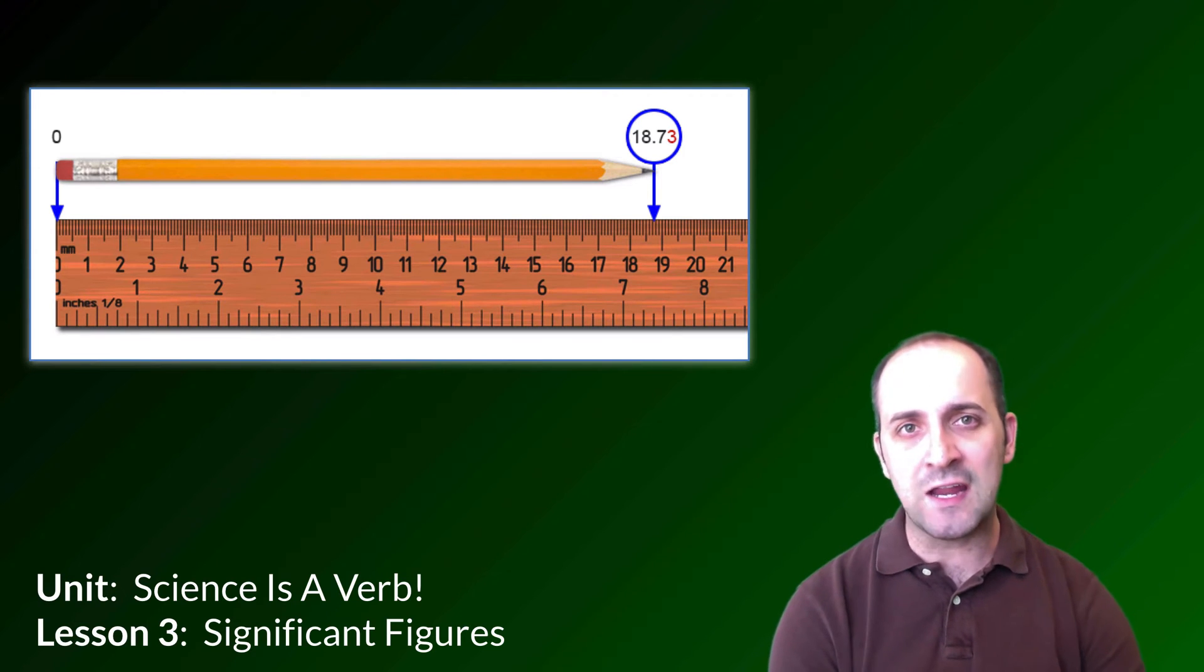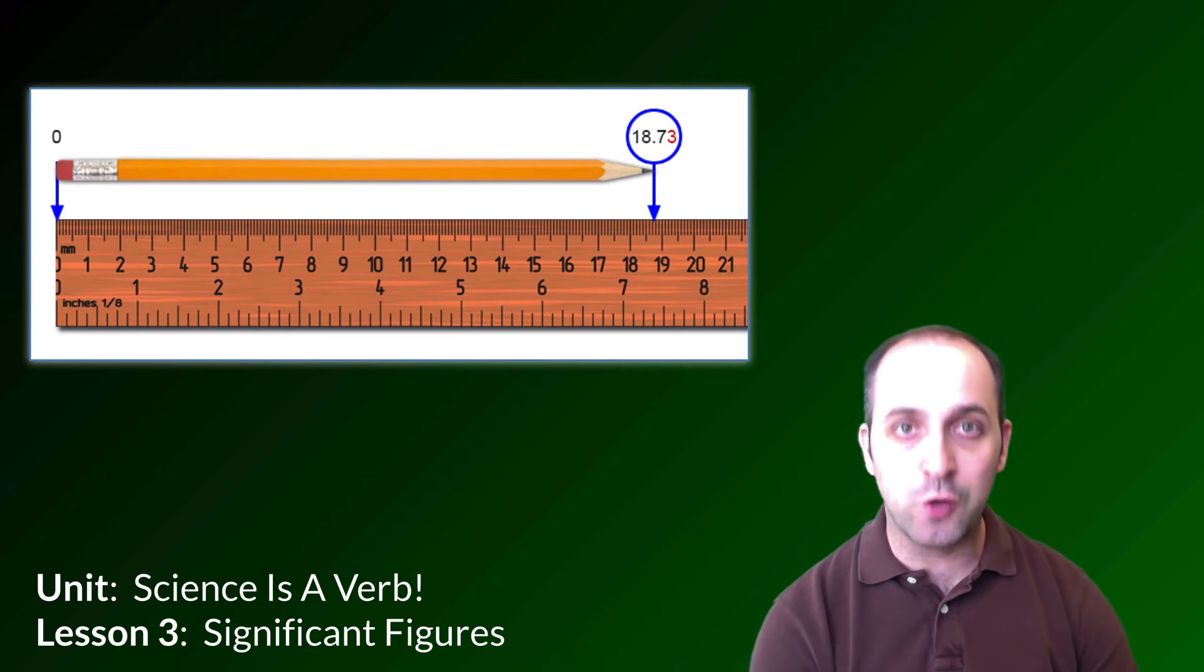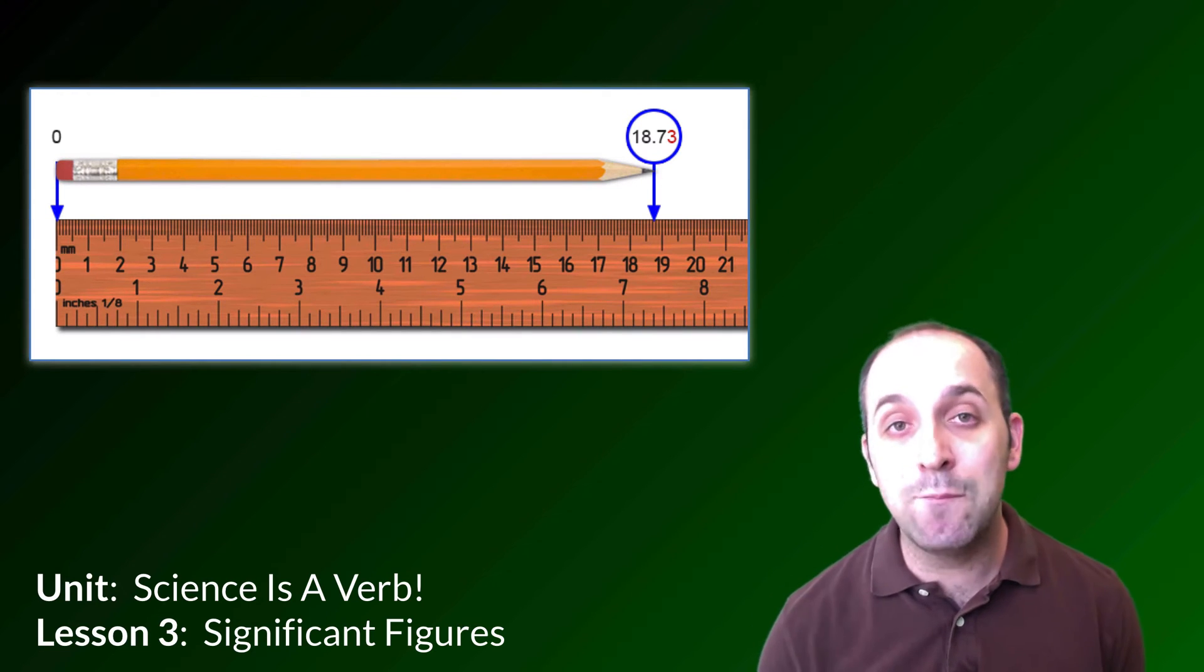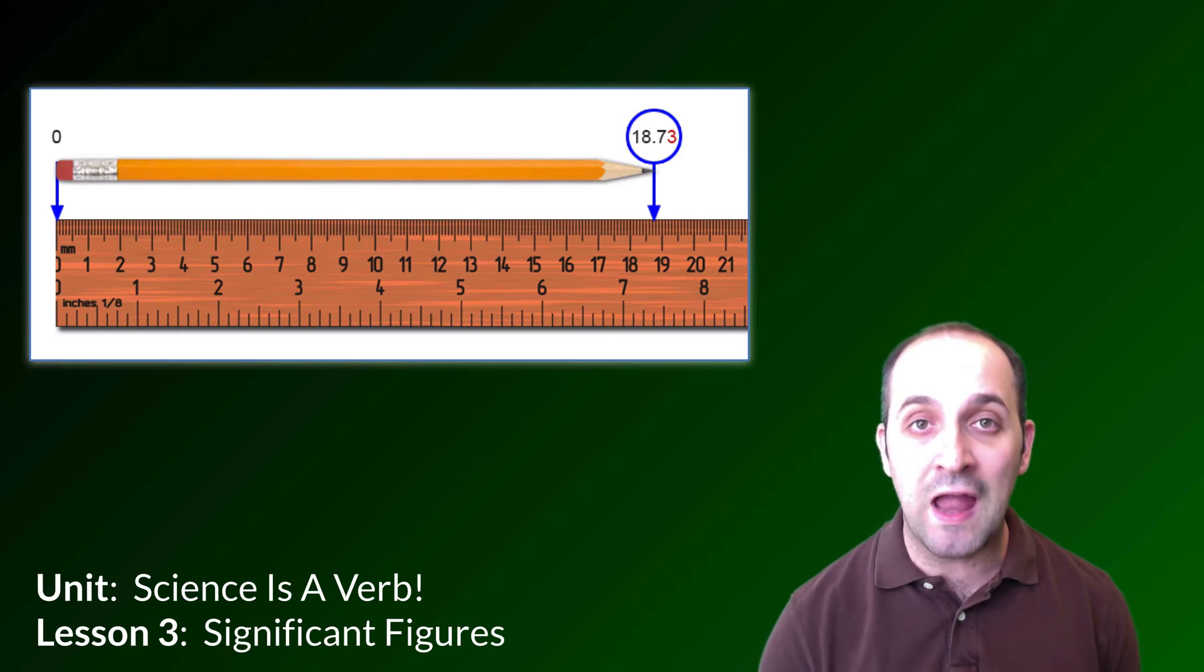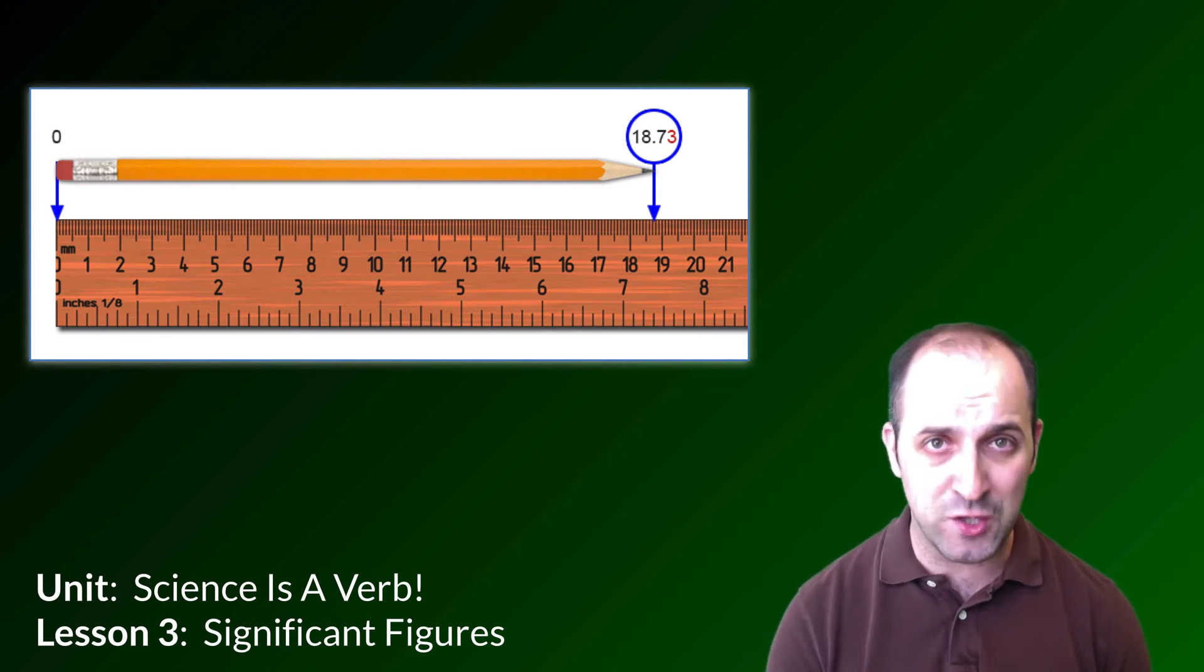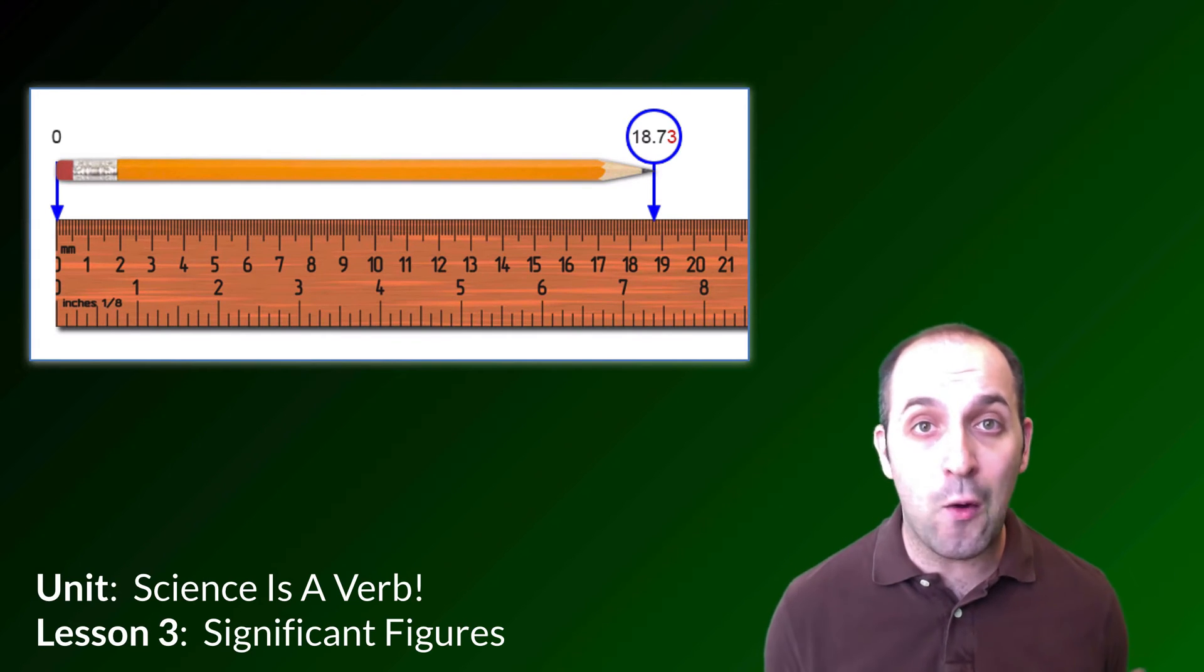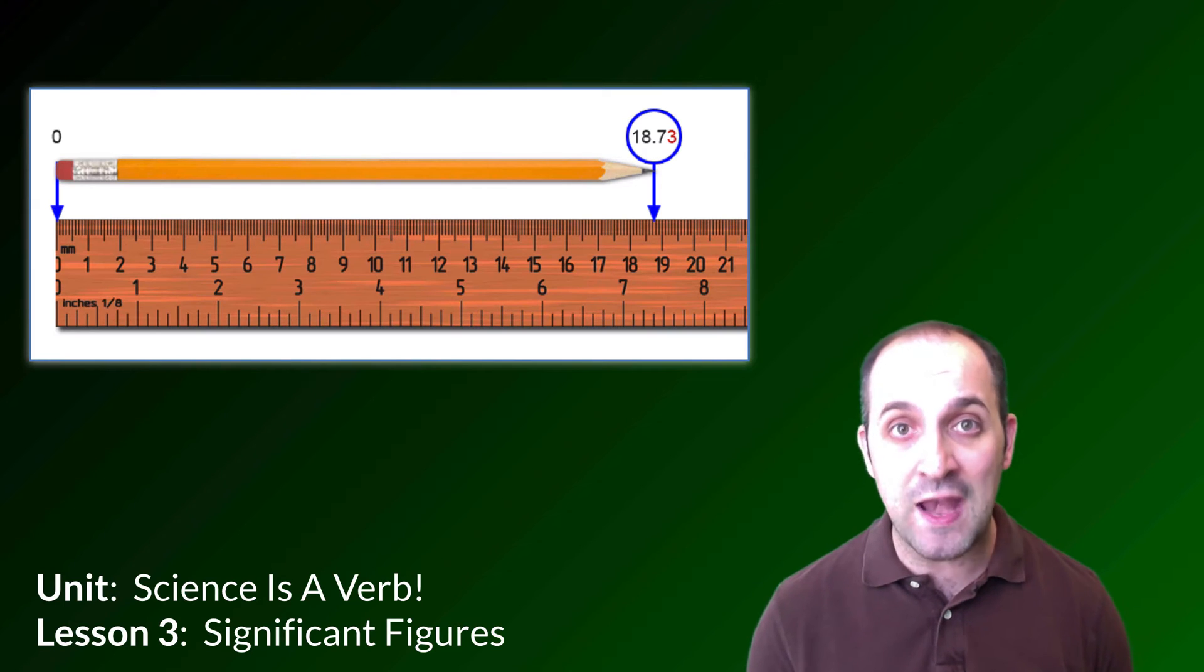If they told you it was 19, you might think they were a little sloppy, but you'd probably be okay with that. If they told you it was 18.7, you'd probably be cool with that too. But if they told you it was 18.73829641984, you'd probably be a little bit suspicious about that. And you should be,